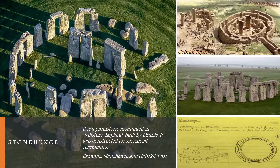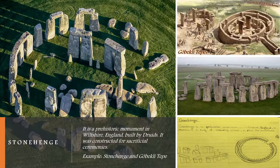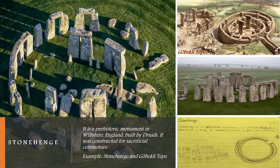The second prehistoric monumental structure is Stonehenge. It's a prehistoric monument found in Wiltshire, England, and it consists of a ring of standing stones, each around 4 meters high and 2.1 meters wide, and weighing around 25 tons. Stonehenge is a very famous monumental site that was built by the Druids to host sacrificial ceremonies.